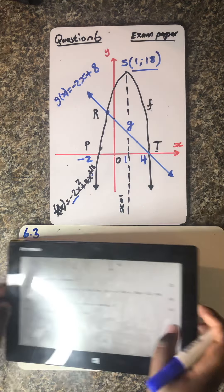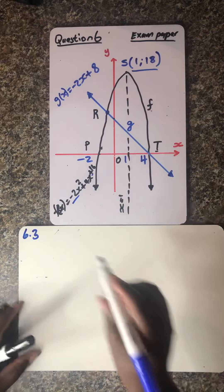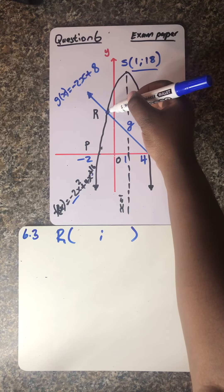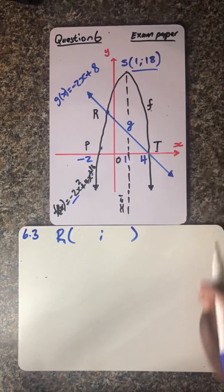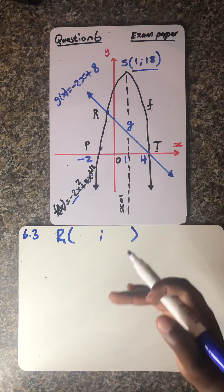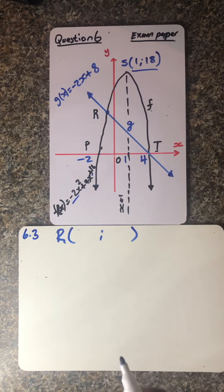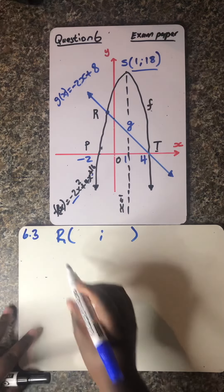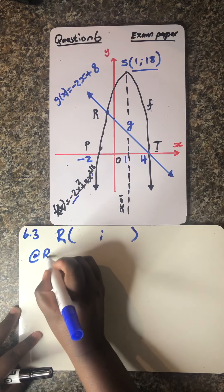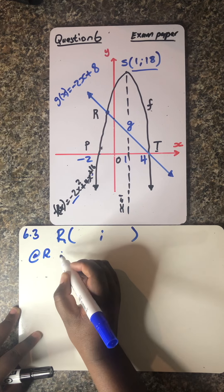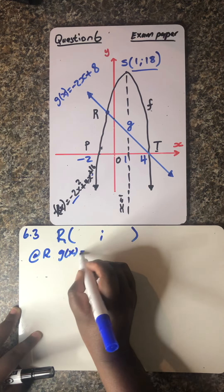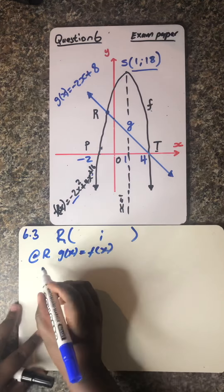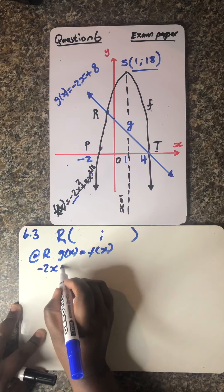This is the coordinates of R, ladies and gentlemen — this is the point of intersection of the two graphs. What we know about R is that point at R is not positioned on any of the axes. So we cannot say maybe x is 0 or y is 0. That only applies where the graph touches one of the axes. So obviously we know at point R, that's where g of x is equals to f of x. This is a very massive step ladies and gentlemen, because you just equate the two equations and solve.